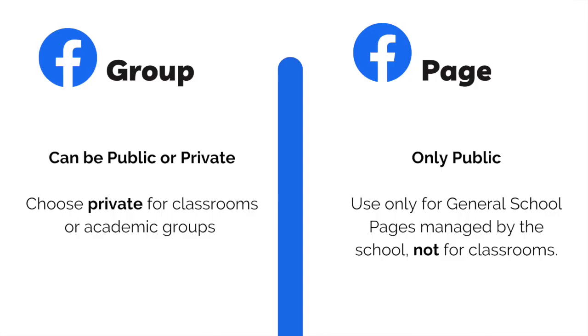The first thing we need to understand about Facebook is there's a difference between a Facebook group and a Facebook page. A group can be set as private and locked down a little bit more, whereas a Facebook page is public and anyone can like or follow the content. Most often you will see private Facebook groups for classrooms or academic groups, and pages for general school information on behalf of the school.